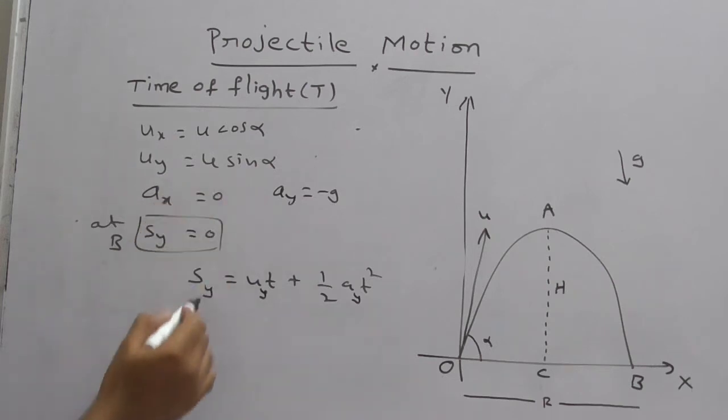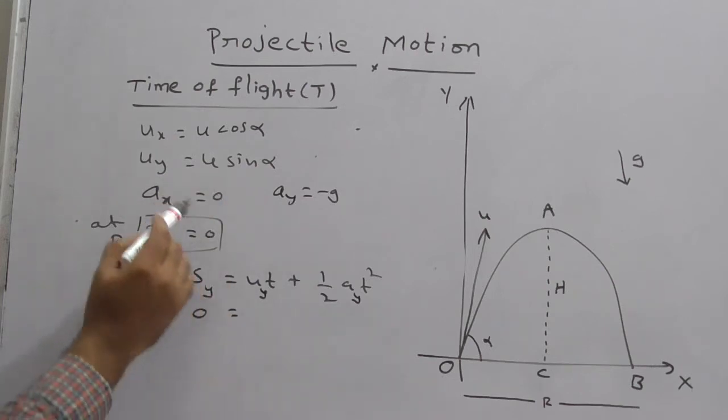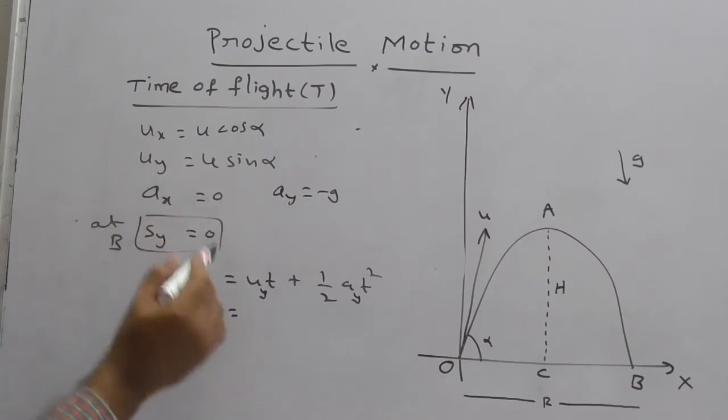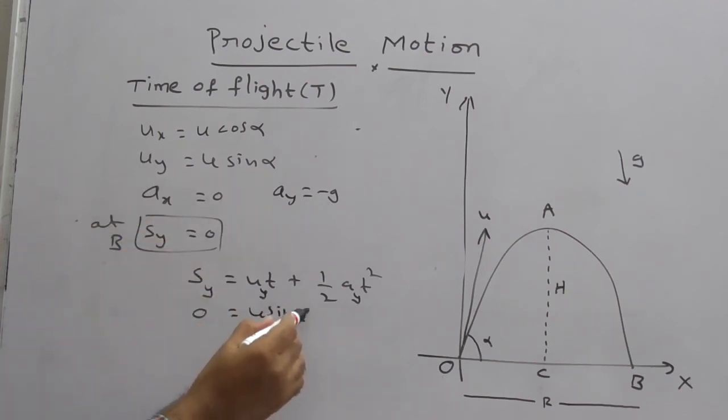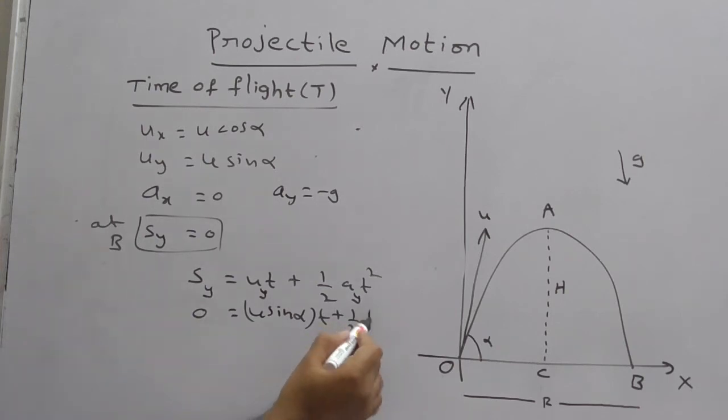Now, substitute all this point. Sy is 0. According to the basic point, what is uy? U sin alpha. U sin alpha into t plus half. What is ay? So here, ay is minus g. Ay is minus g t square.